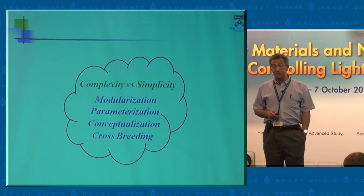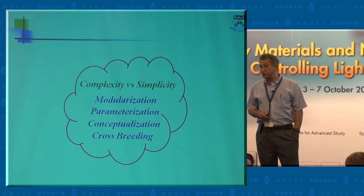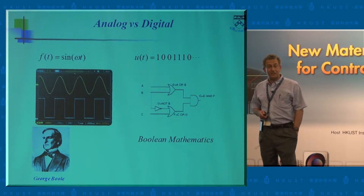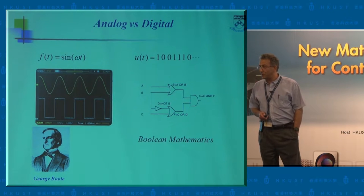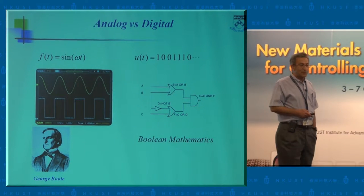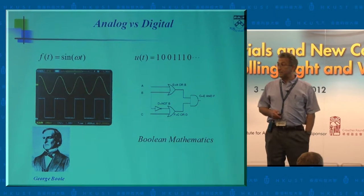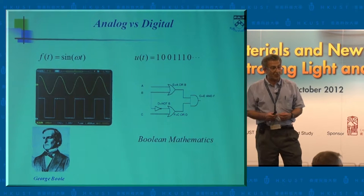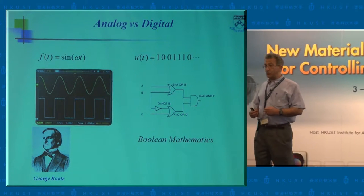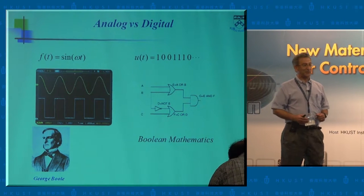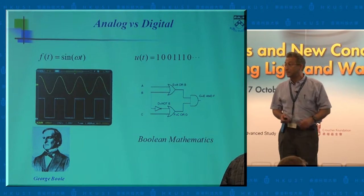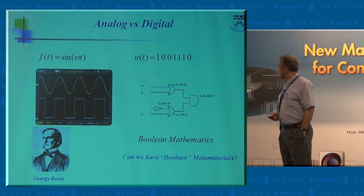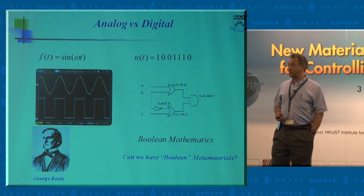Let me share those five examples — three of them are very trivial, and the other two are well known but maybe less obvious. One interesting area is the balance between analog and digital concepts. Digital electronics have been fascinating. George Boole's algebra balanced the complexity of analog signals with the simplicity of digital signals — you let go of some information in the analog signal for the benefit of simplicity in the digital signal. Can we do that for metamaterials? Can we have Boolean metamaterials — what I call digital metamaterials?